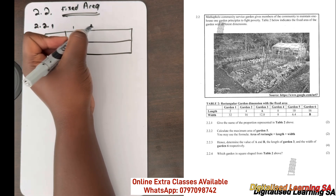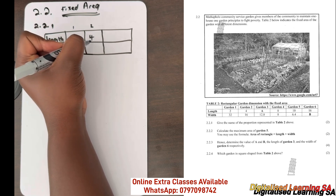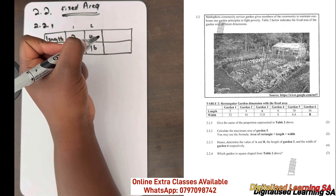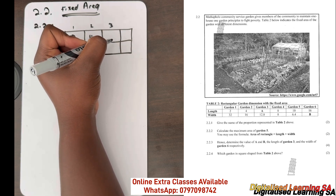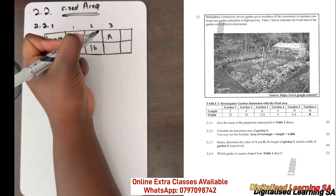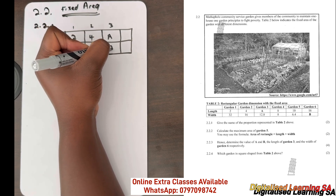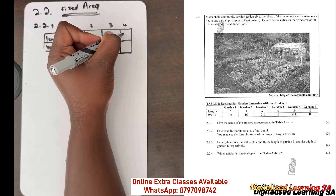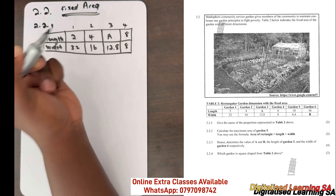For garden 2, the length is 4 and the width is 60. For garden 3, the length is not given but the width is 12.8. For garden 4, the length is 8 and the width is also 8.